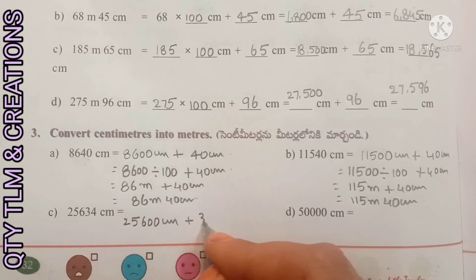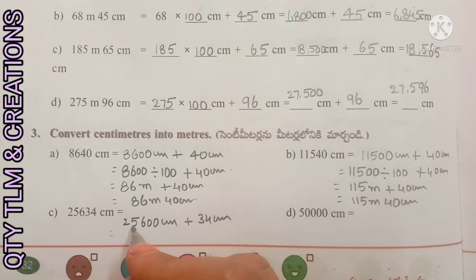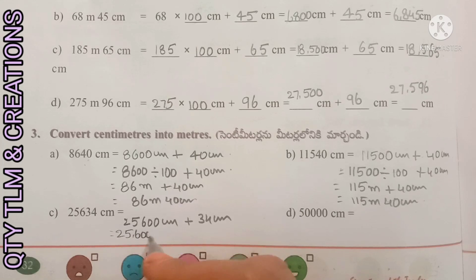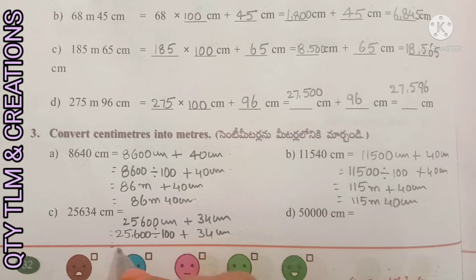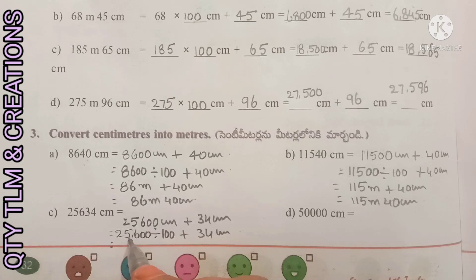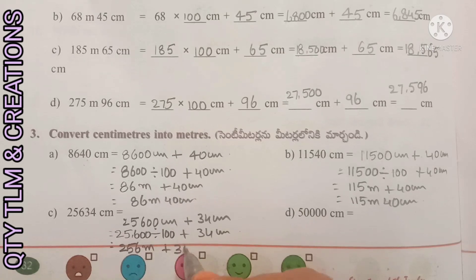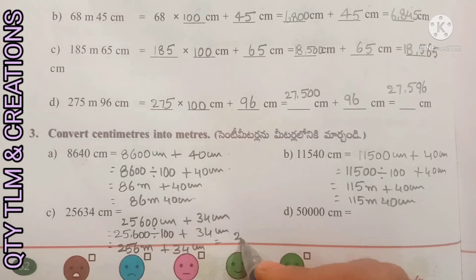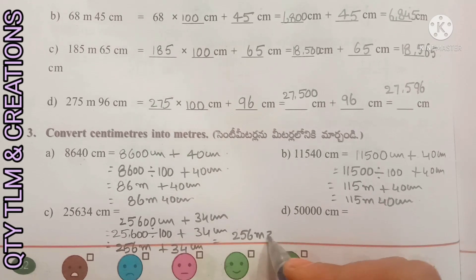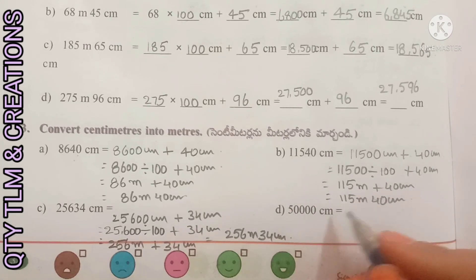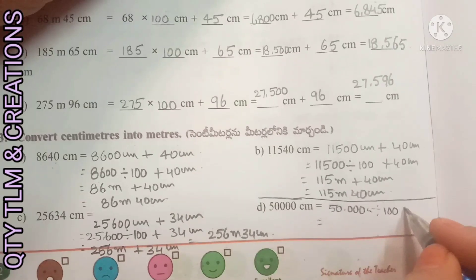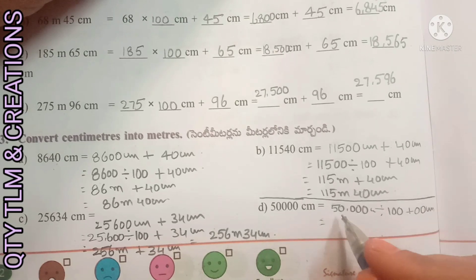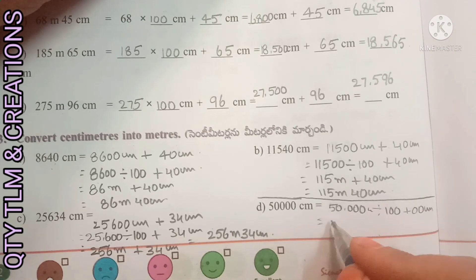25,600 divided by 100 plus 34 centimeters: 25,600 divided by 100 equals 256 meters plus 34 centimeters equals 256 meters 34 centimeters. Next, 50,000 centimeters: 50,000 divided by 100 equals 500 meters plus 0 centimeters equals 500 meters.